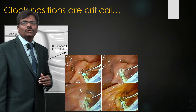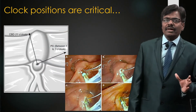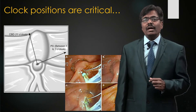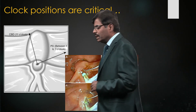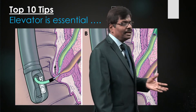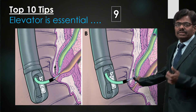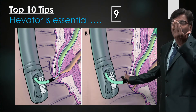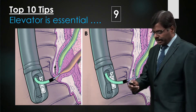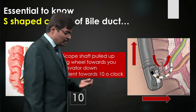Understanding these clock positions is critical. For example: what if you cut at 12 o'clock? Unnecessary bleeding results. The elevator is essential — if fully down, you go up into the bile duct; if half down, you tend toward the pancreatic duct. And remember: the course of the bile duct over the last two or three centimeters is not a simple gentle curve — it is S-shaped, like a sigmoid curve, and can challenge all your skills.